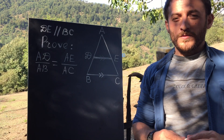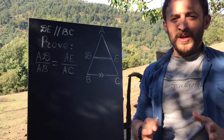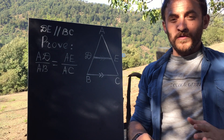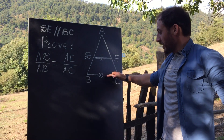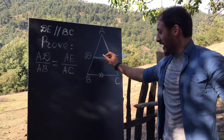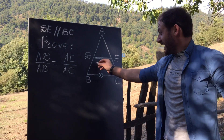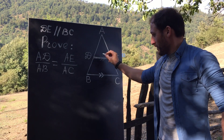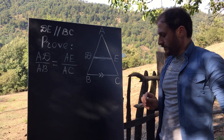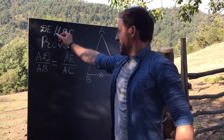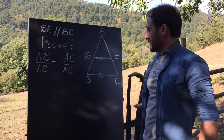Hi guys, today I show you how to prove the proportionality theorem. If a line parallel to one side of a triangle intersects the other two sides in distinct points, then it cuts segments whose lengths are proportional. Given DE parallel BC, triangle ABC.